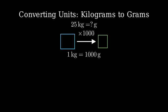When we go from a larger unit to a smaller unit, we multiply. The conversion factor between kilograms and grams is one thousand. This means that one kilogram equals one thousand grams. Let's solve this using dimensional analysis.